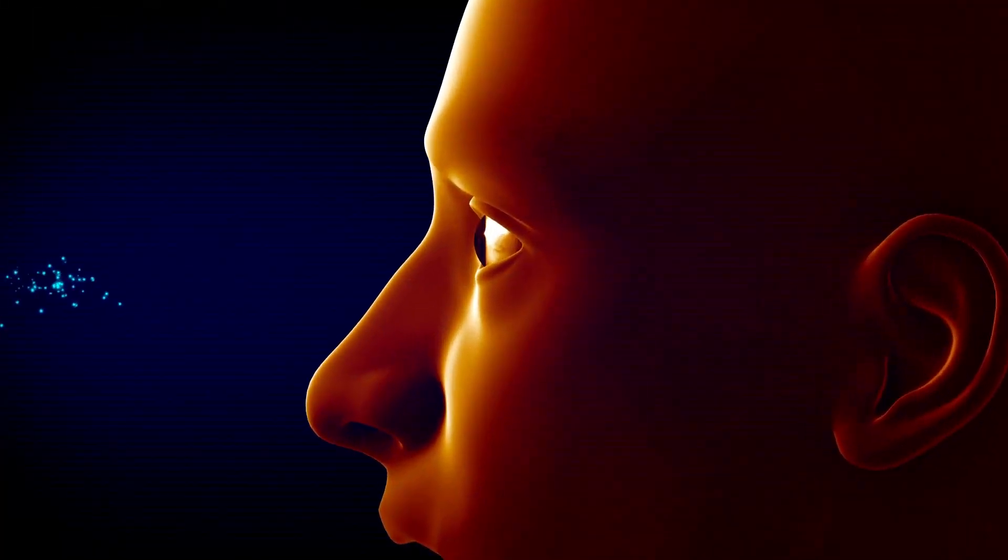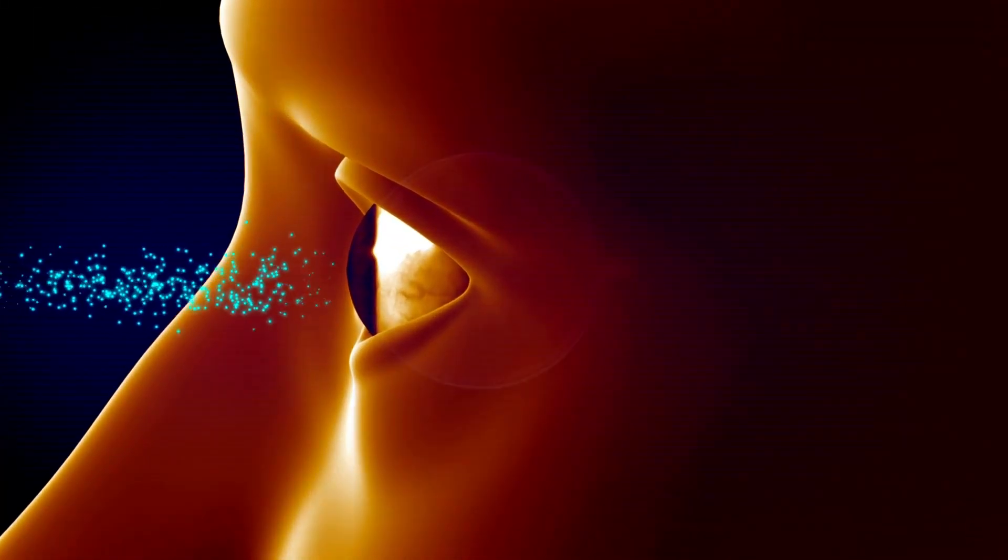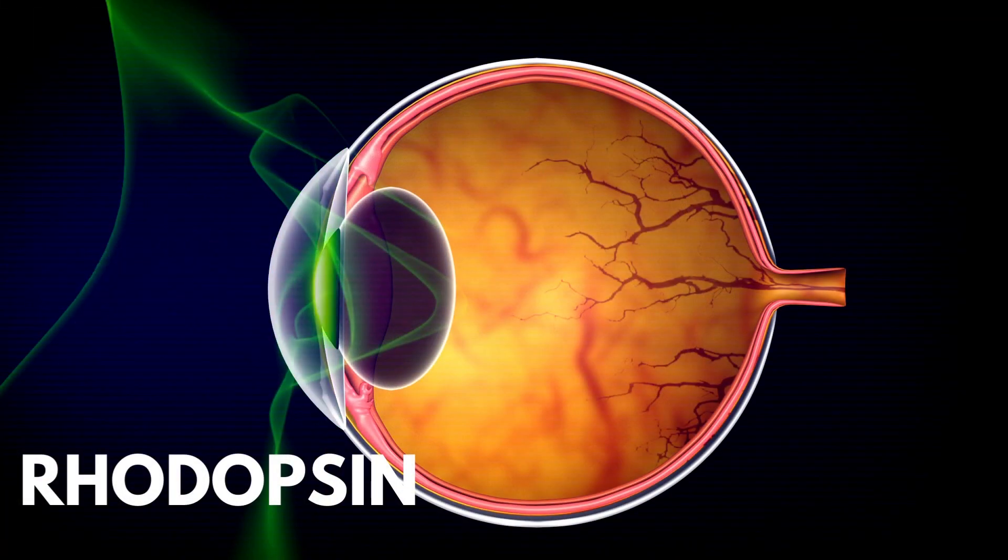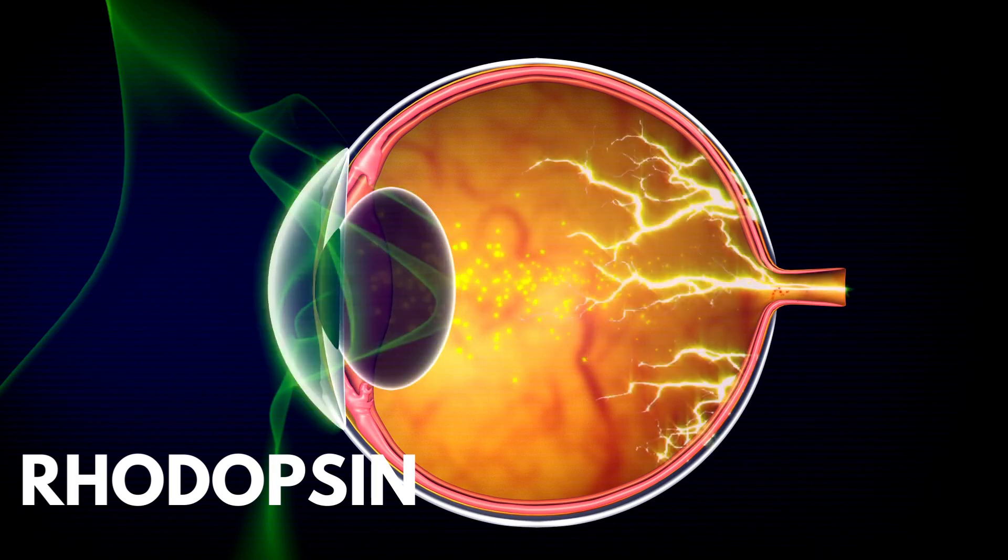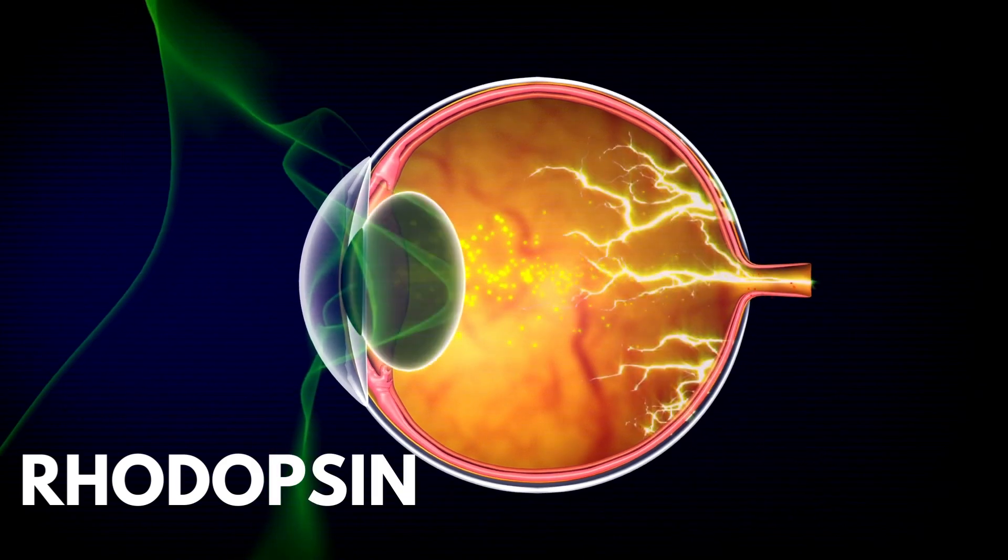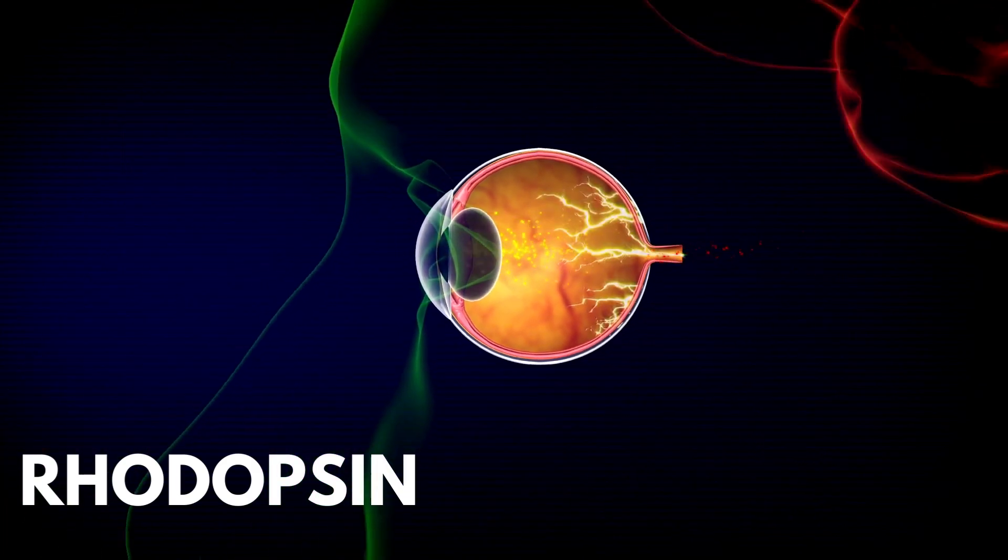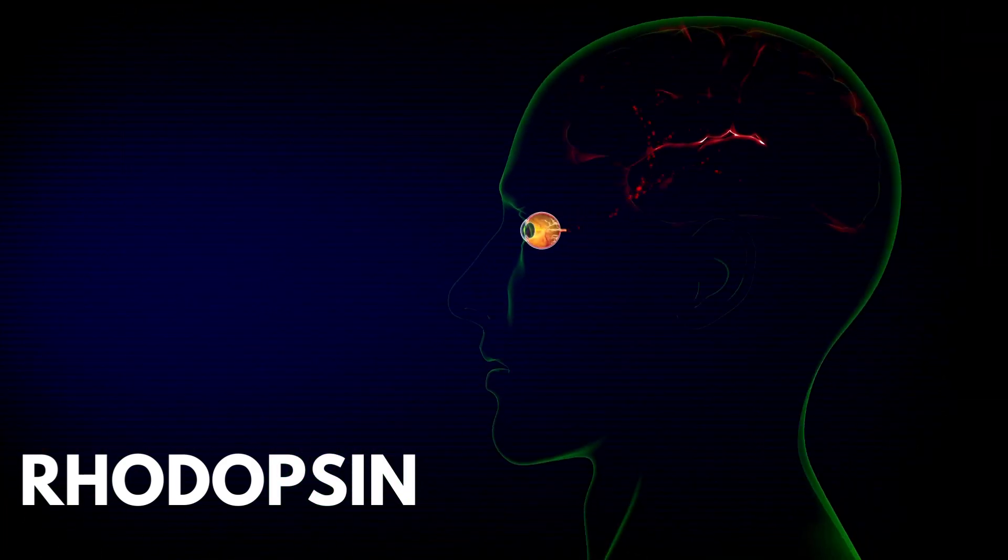The rods in our eyes contain an active substance known as rhodopsin. It's a remarkable molecule that can absorb a single photon of light, causing it to change shape and trigger a chemical signal transmitted to the optic nerve.